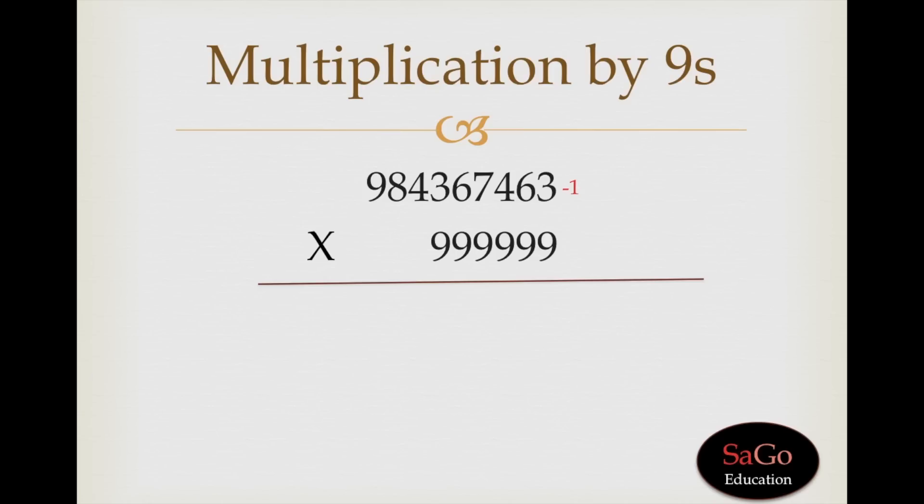And now, identify how many 9s are less and under which digit. 984 is the digit where there is no 9 below it. So, subtract 984 also from the upper digit. When we subtract 1 and 984 from the whole upper digit, we will get this.